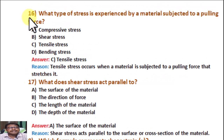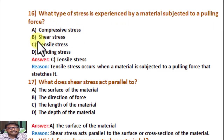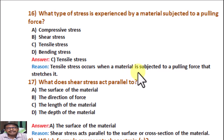Question number 16. What type of stress is experienced by a material subjected to a pulling force? A: Compressive stress. B: Shear stress. C: Tensile stress. D: Bending stress. Correct answer is C, Tensile stress. Reason: Tensile stress occurs when a material is subjected to a pulling force that stretches it.